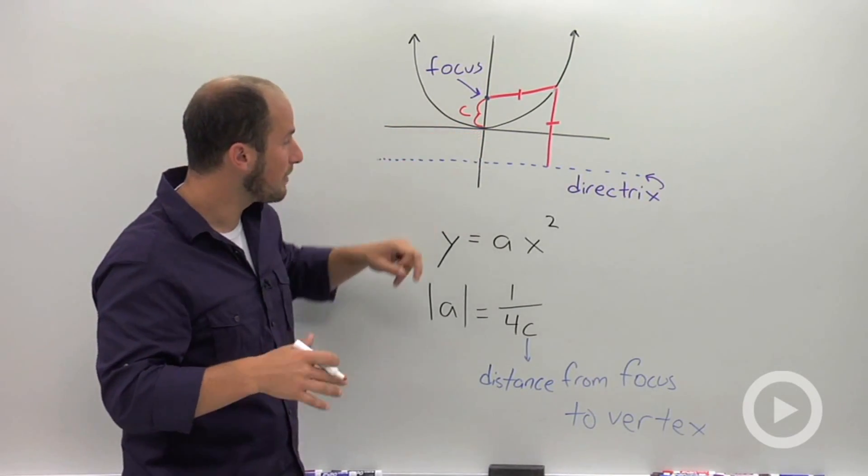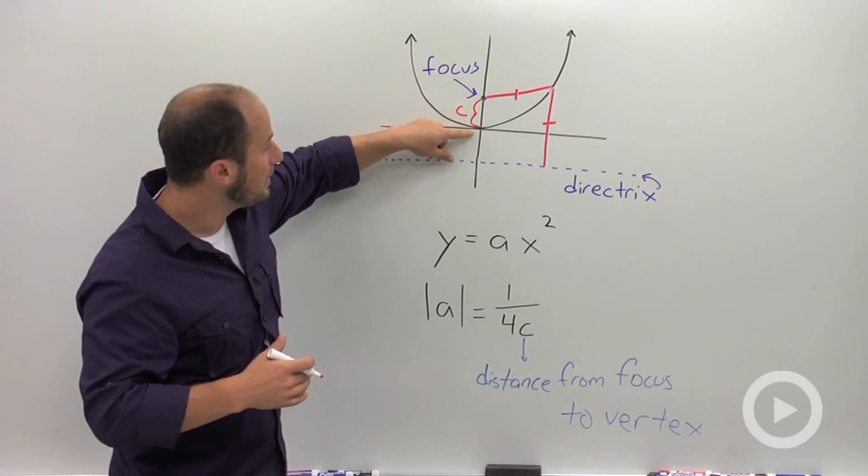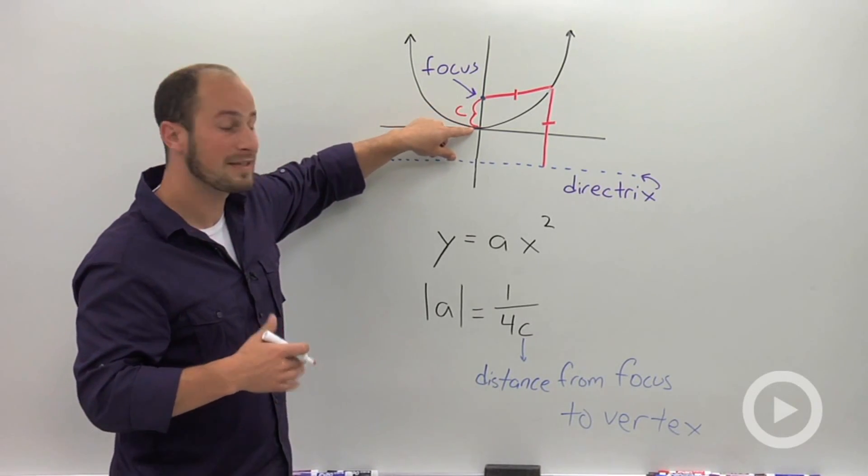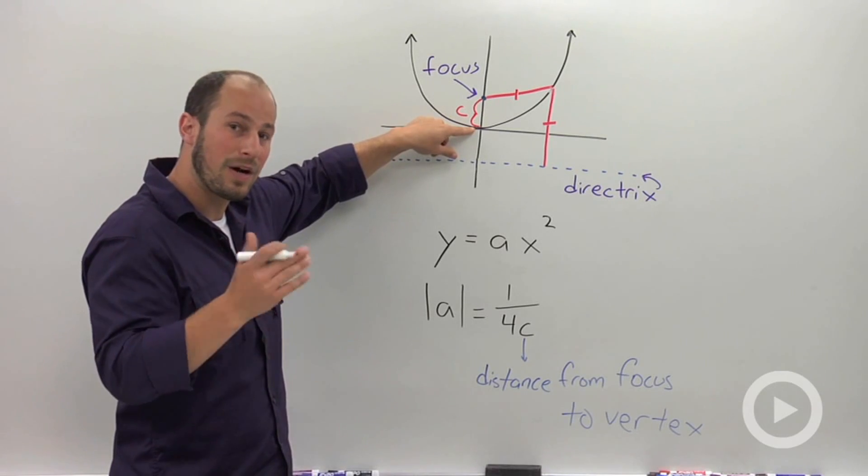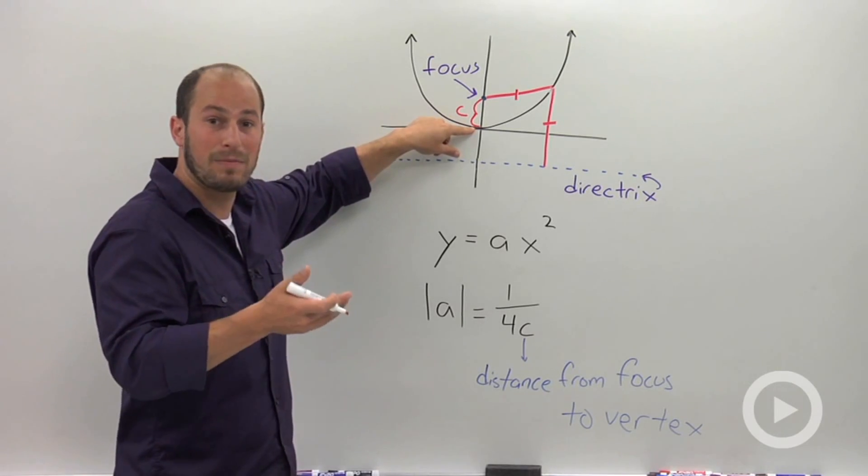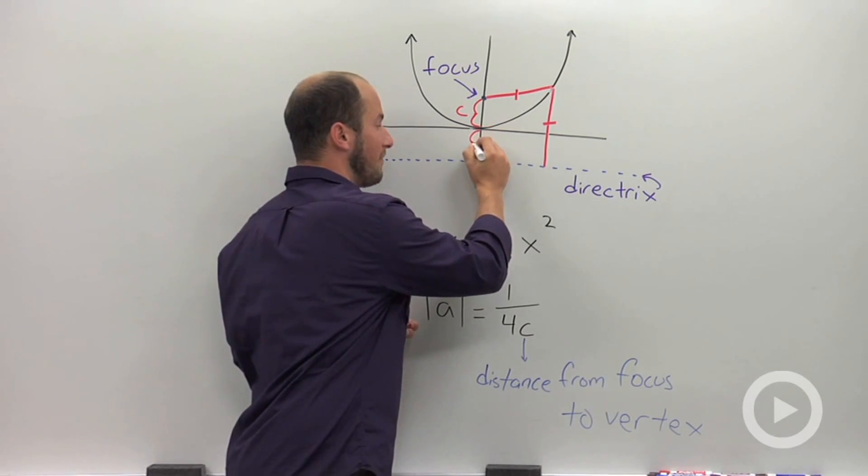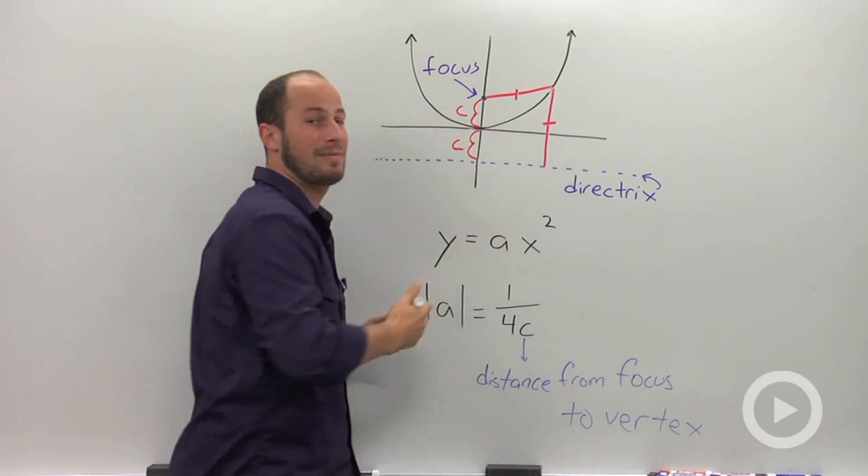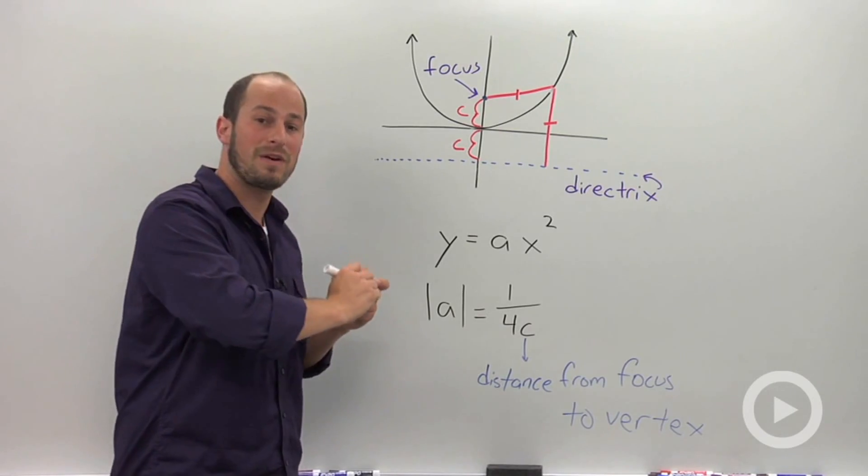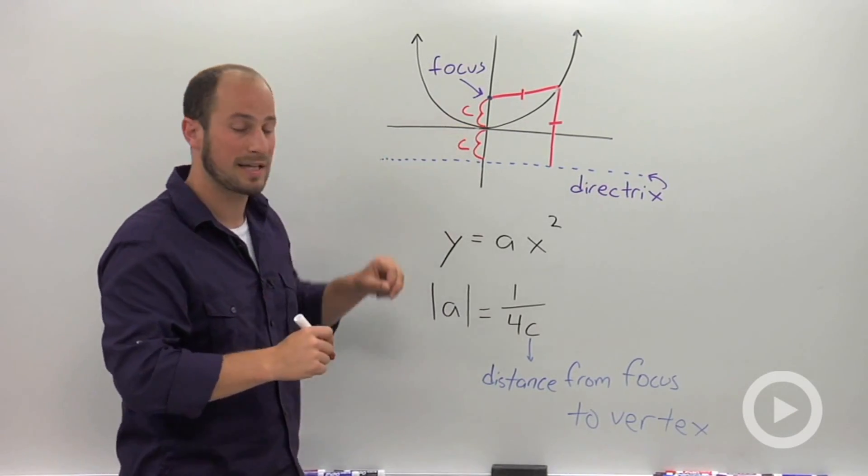The one other thing I want to talk about is we know this distance c between the focus and the vertex is c. We also know that's going to be the same distance from the point to the directrix. So by default, right at that vertex point, that's going to be the same distance c from the directrix to the vertex.